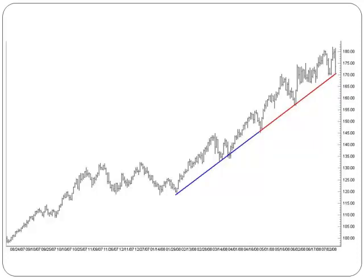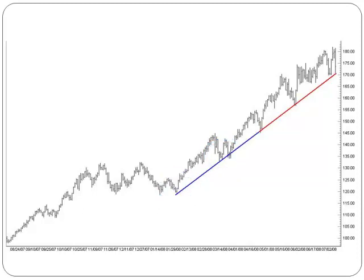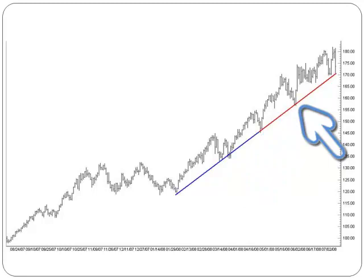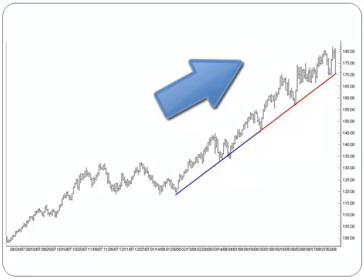This is the chart of crude oil electronic from August 2007 to July 2008. The uptrend line is drawn by connecting the two rising higher lows. Notice that prices continue to bounce back whenever it touches the trend line, meaning net demand is still increasing, which leads to rising prices. Therefore, the market is bullish.